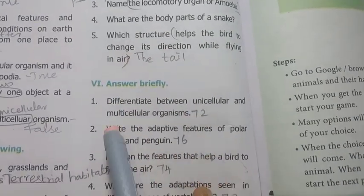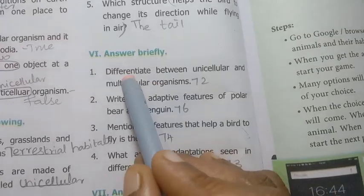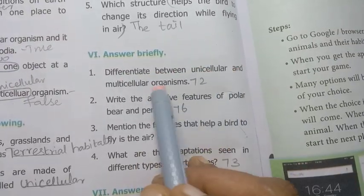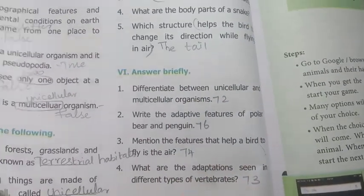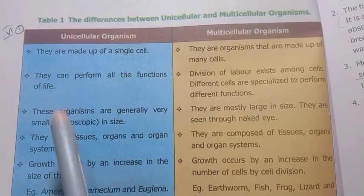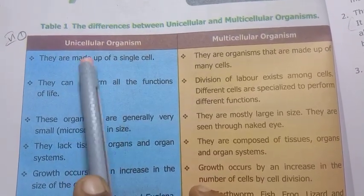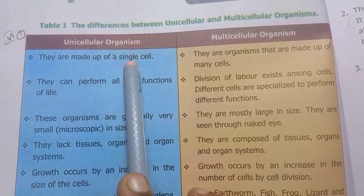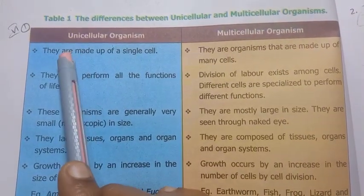Roman number 6: Answer briefly. First: differentiate between unicellular and multicellular organisms — page number 72. Unicellular organisms are made up of a single cell, while multicellular organisms are made up of many cells.